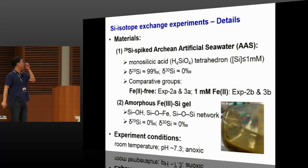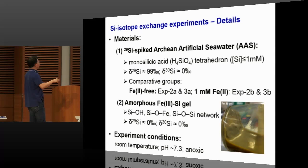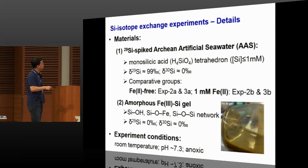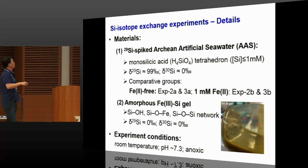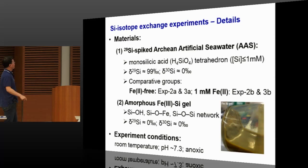Each group of experiments contains two experiments. The solid phase is the amorphous ferric silica gel — just an amorphous material. The silicon atoms in this gel are present in different bonding environments: silicon hydroxide groups, silicon-oxygen-iron bonding, and silicon-oxygen-silicon network. The iron silica gel has normal silicon isotope composition, so both delta 29 silicon and delta silicon 30 have values of 0 per mil. The experiment was conducted at room temperature and circumneutral pH, and all experiments were done in an anaerobic chamber, free of oxygen, to prevent oxidation of Fe2+.